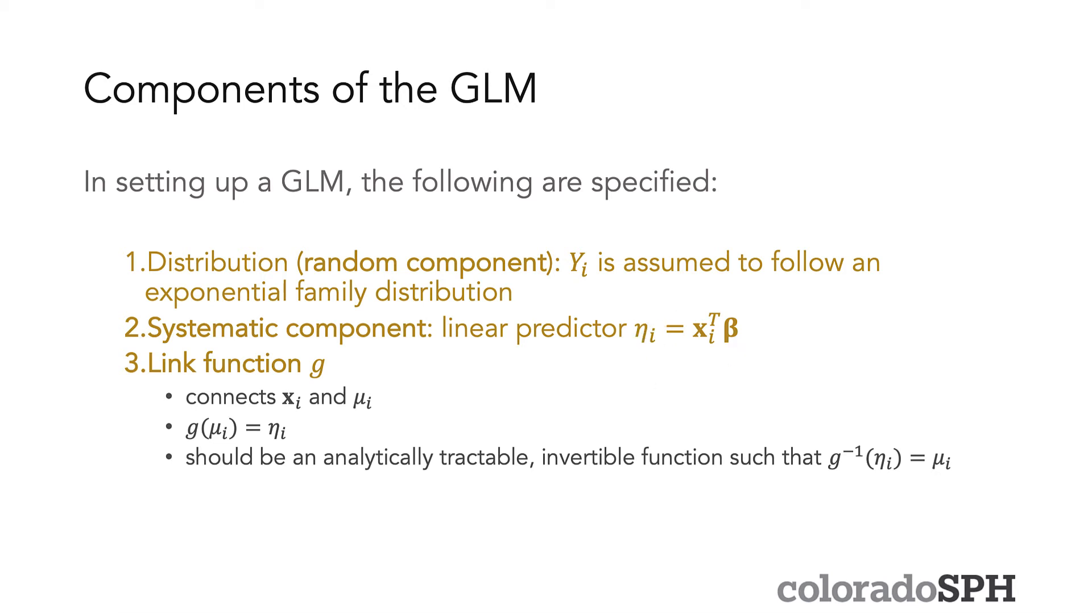And the third component is the link function g, which connects X_i to mu_i, by g(mu_i) equals eta_i. And the g should be analytically tractable in the sense that you can solve it by hand and get the inverse to find what mu_i is equal to in terms of the g inverse of the linear predictor eta.